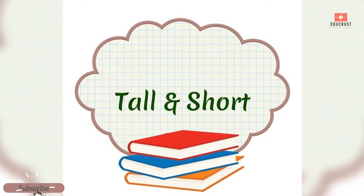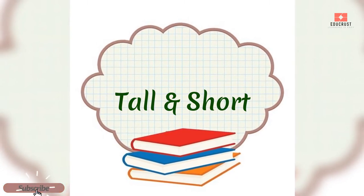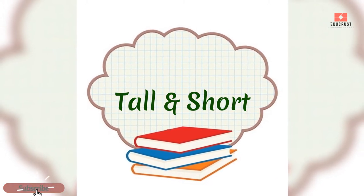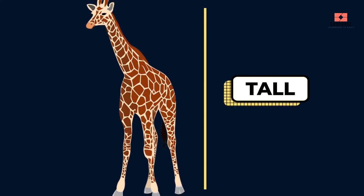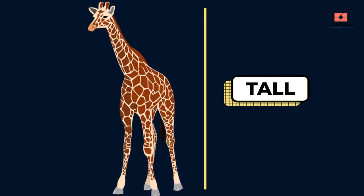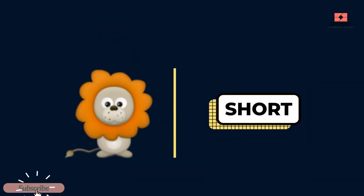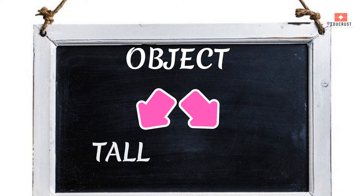Hi kids! Today we'll learn about the concept of tall and short. Are you ready? Here we go. Tall — a giraffe is tall in height. Short — a lion is short in height. Objects can be classified as tall or short on the basis of their height.